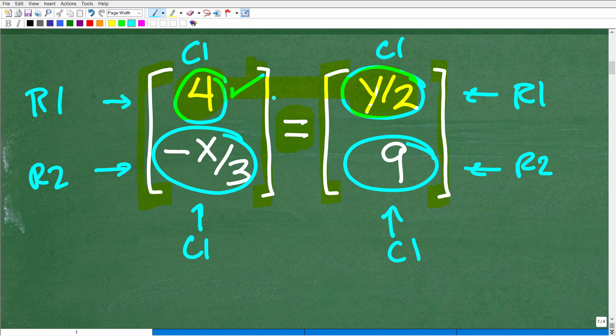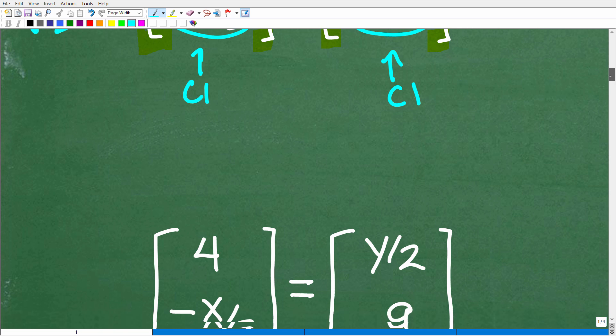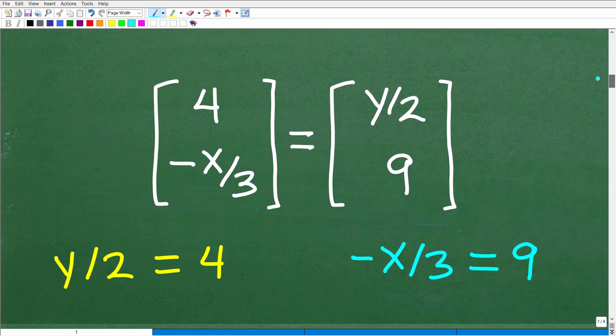So let's go ahead and get into this problem. All we need to do is create an equation here for these respective entries. So we're going to say, well, four must be equal to y over two. So we'll just create an equation here. We'll write it this way. We'll put the variable on the left-hand side, y over two, or y divided by two, same thing, is equal to four. And then here we have negative x over three, and we'll equate that to nine. So we have negative x over three is equal to nine.